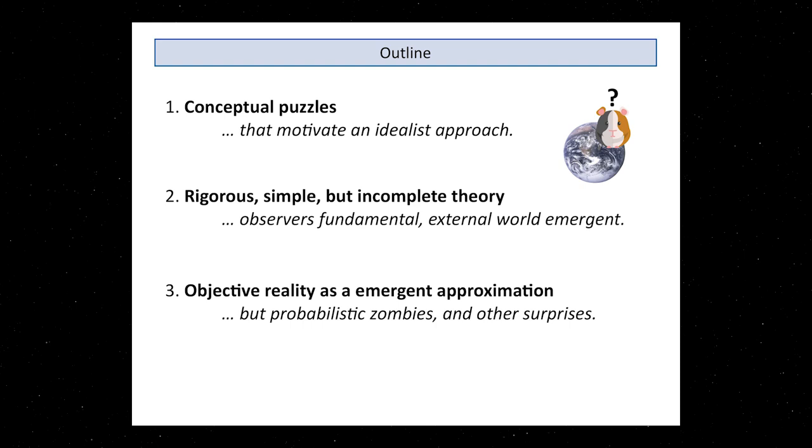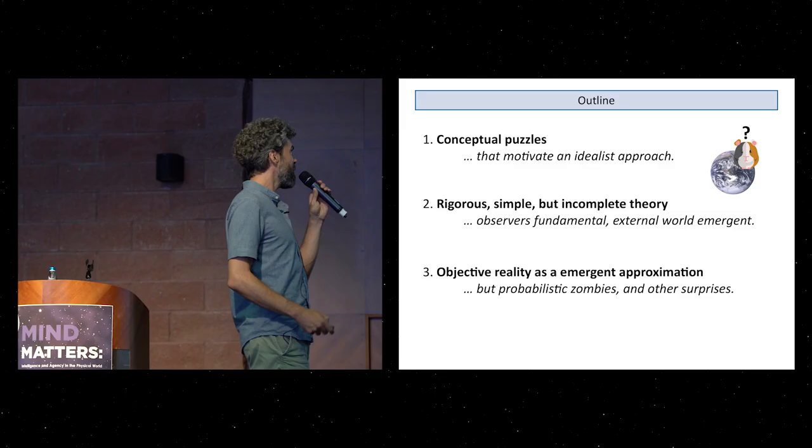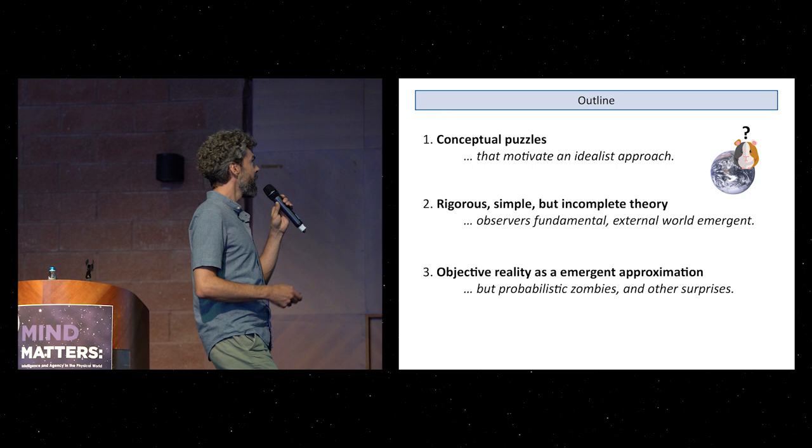So the second part will give you an attempt to do so. It's not a complete theory, it's like a toy model or first simple approach. It's an approach in which observers are fundamental in some sense and we can prove that some sort of notion of an external world emerges.